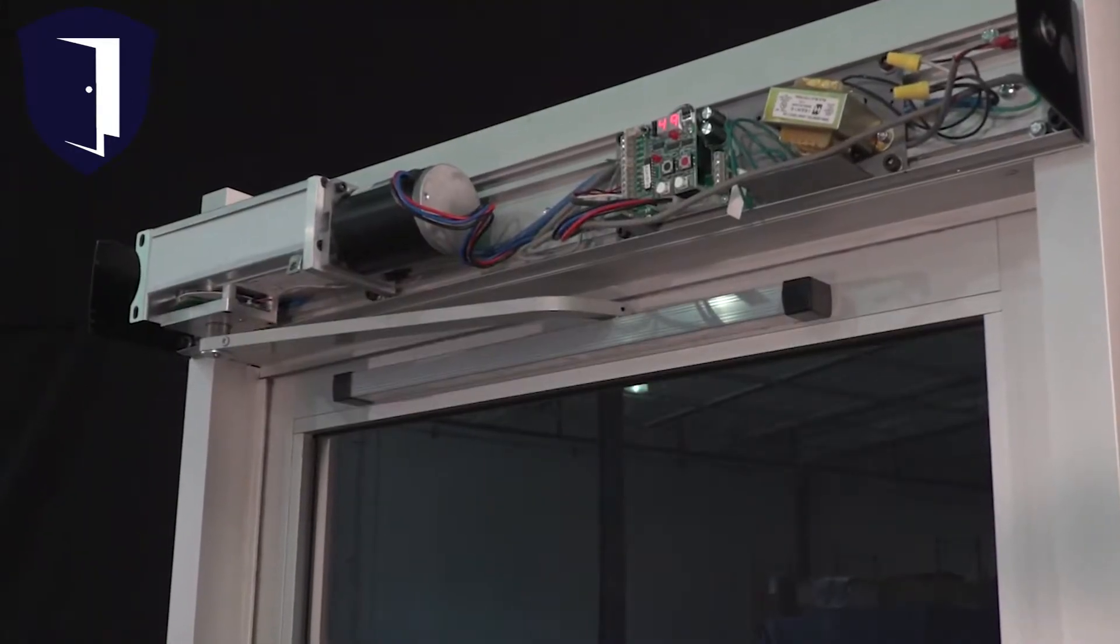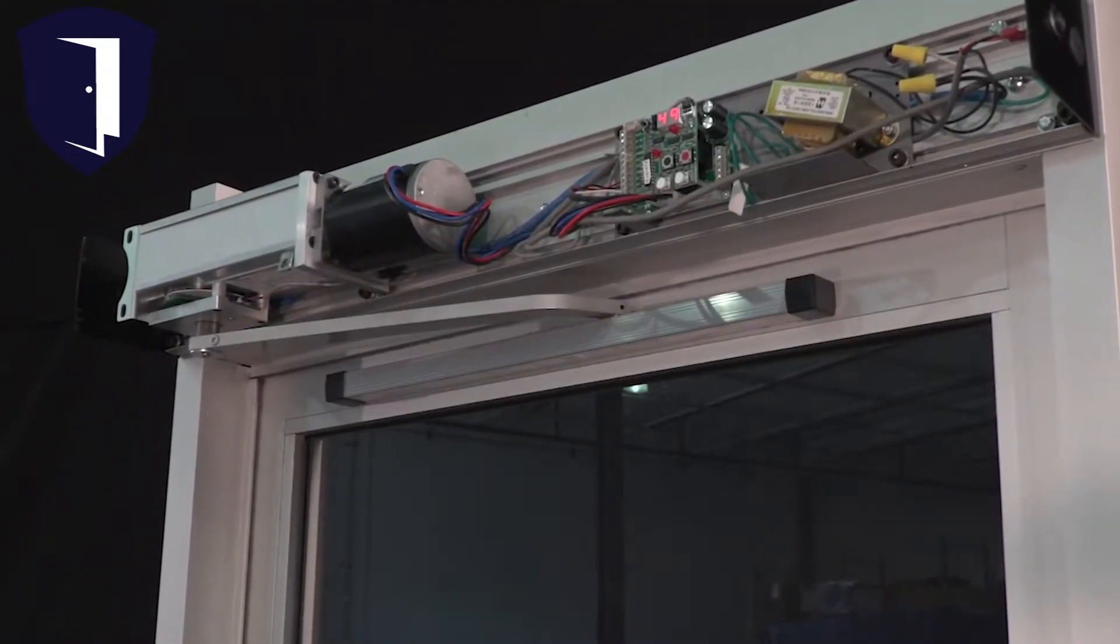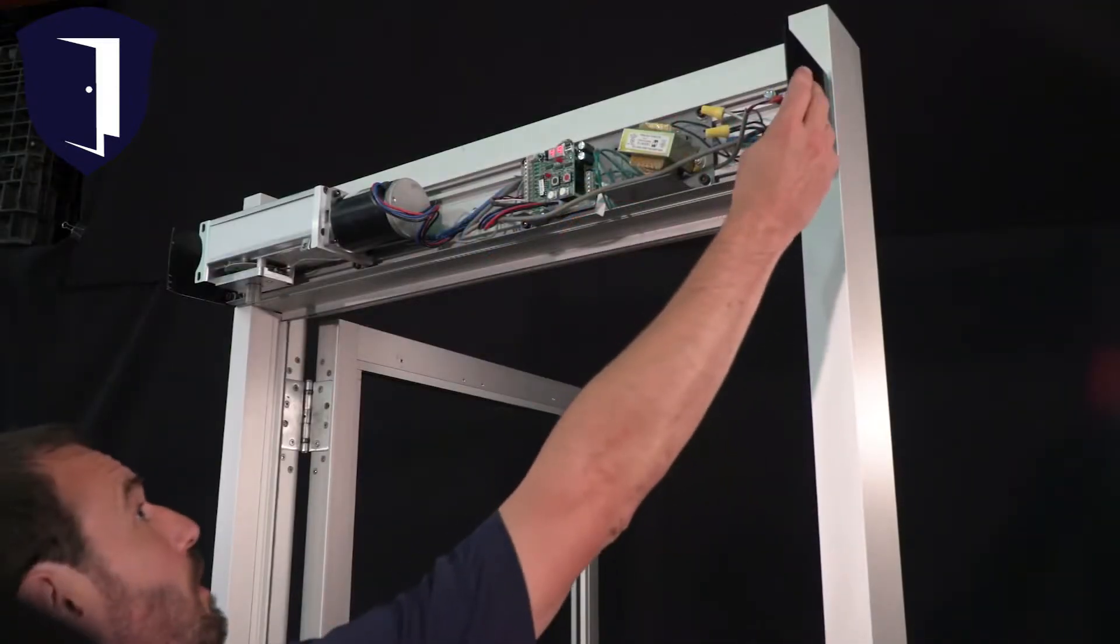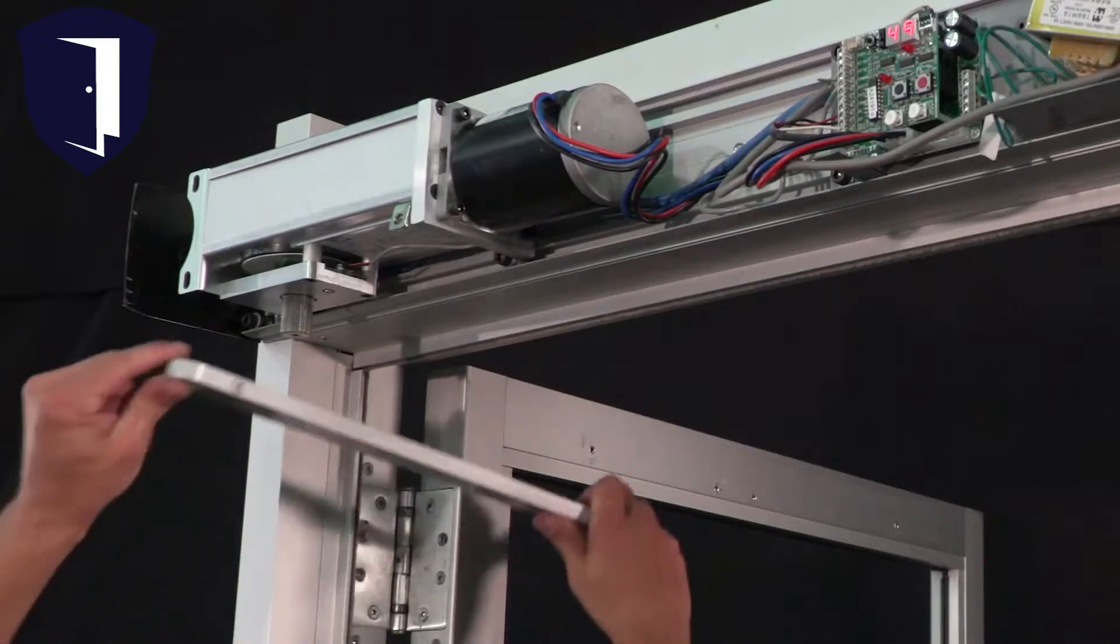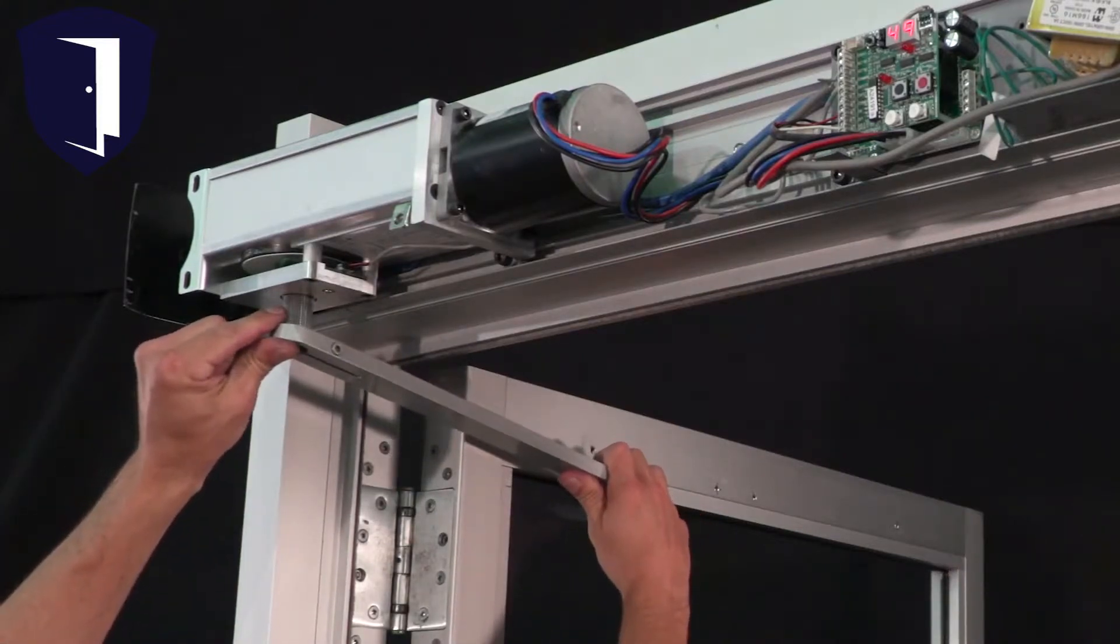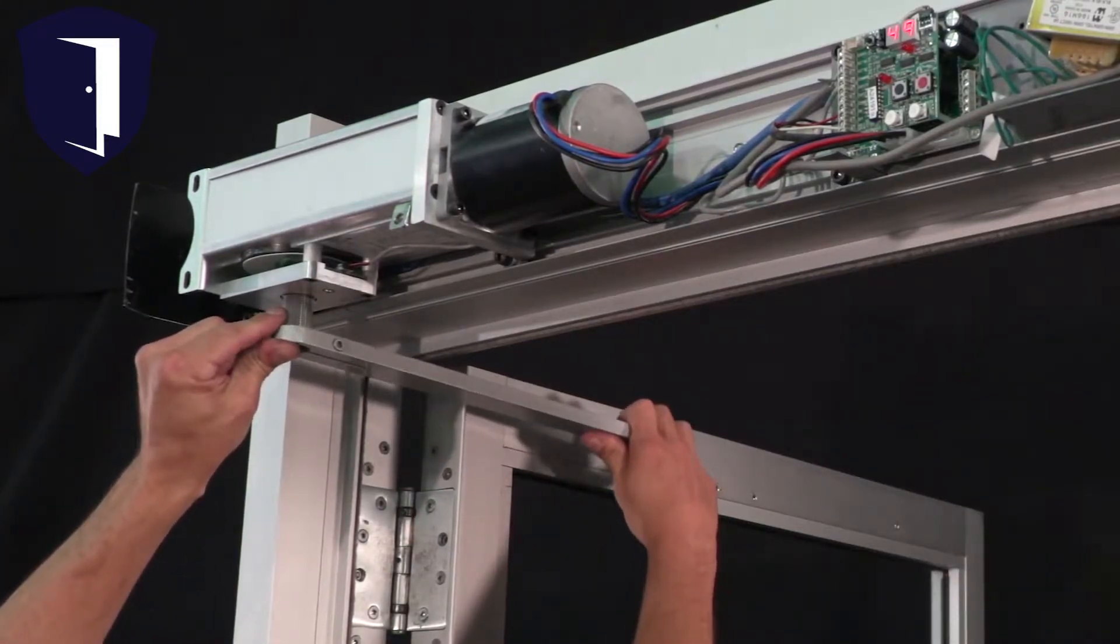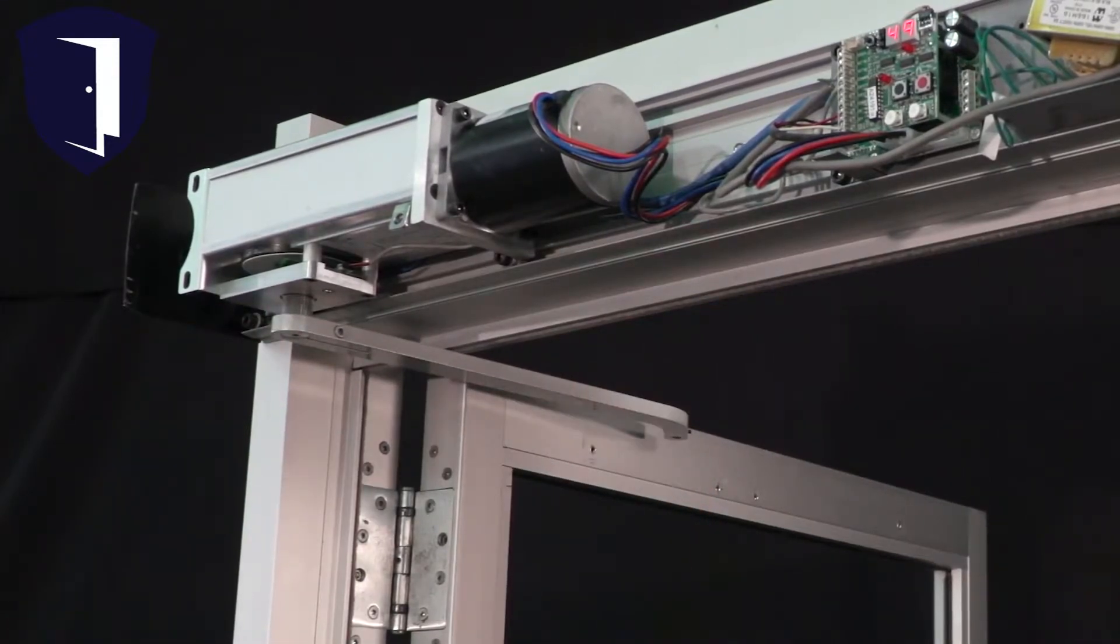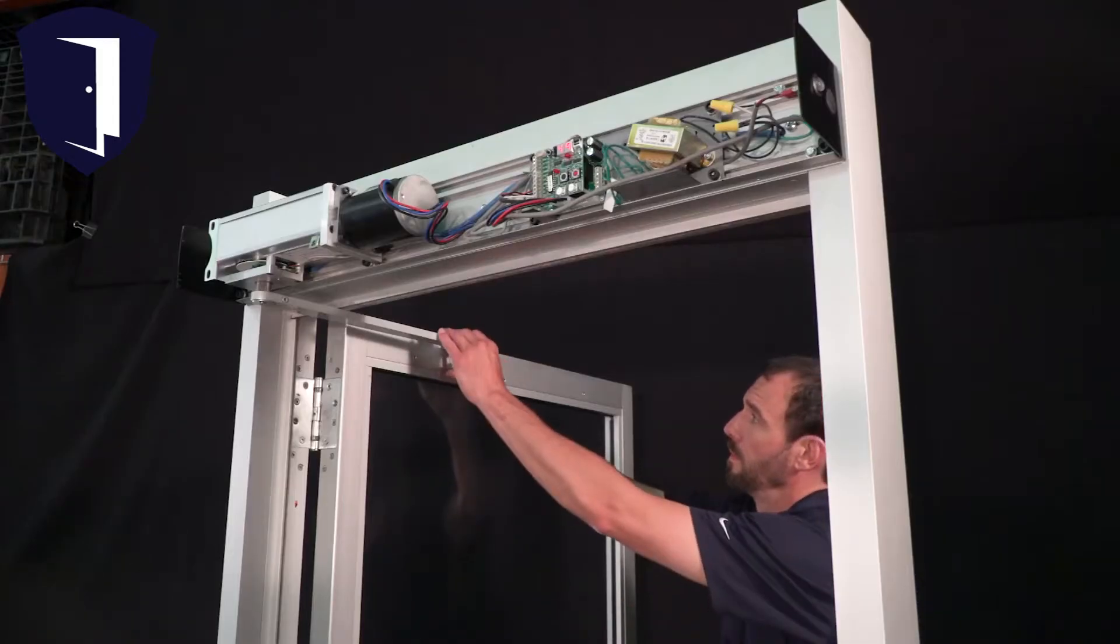Some HA8LP closers feature a universal arm that can be used in both push and pull arrangements. As before, move the operation switch to hold open and allow the spindle to spin till it stops. However, in this case, we'll have the door open to 90 degrees so the arm can be mounted right along the top of the door. Attach the roller through the hole in the end of the arm.